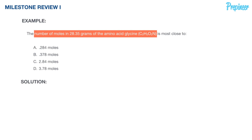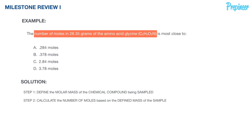Let's scratch out a solution and walk through each step to get to our final result. This is generally a two-step process: first, define the molar mass of the chemical compound being sampled; second, calculate the number of moles based on the defined mass of the sample. We'll use the molecular formula to find the molar mass, then reverse engineer our way into determining the number of moles.